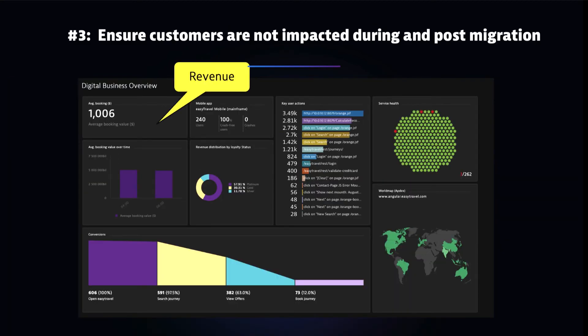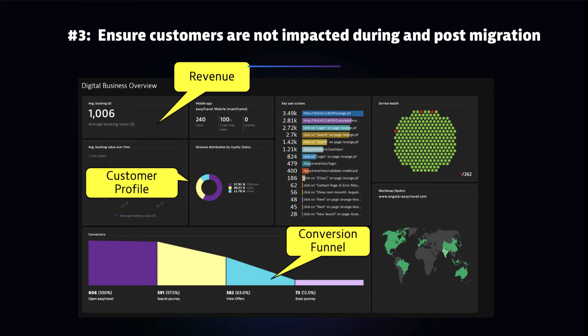Dynatrace is not just an infrastructure or application monitoring tool — it also understands what's happening with end users. By pulling metrics from browser and server-side transactions, we can surface things like what revenue is associated with transactions, the geography of users, and customer profiles — whether they're gold, platinum, or silver customers and where they are in their sales funnel. This combines real-time monitoring with a business view so everyone is on the same page about priorities.